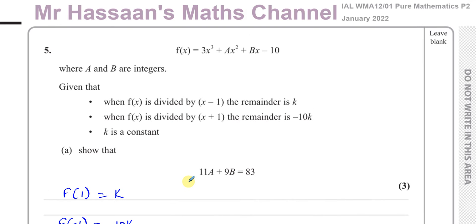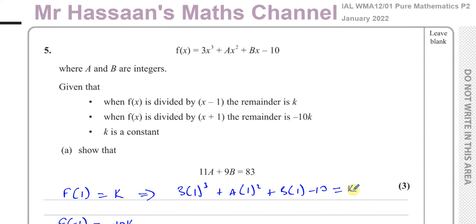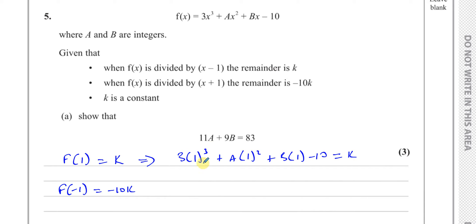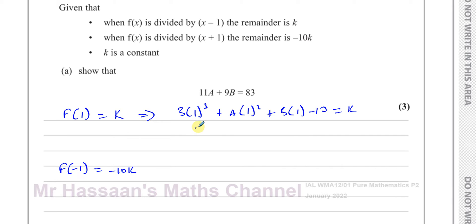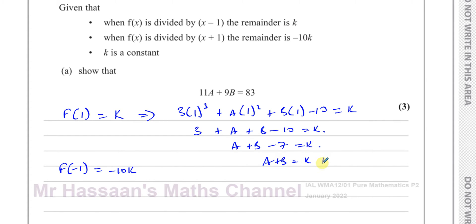Substituting x equals 1 into the function: 3 times 1 cubed plus a times 1 squared plus b times 1 minus 10 equals k. This simplifies to 3 plus a plus b minus 10 equals k, so a plus b minus 7 equals k. Therefore, a plus b equals k plus 7.